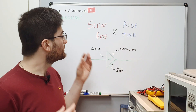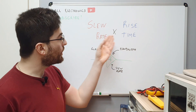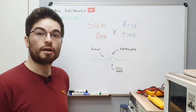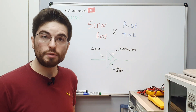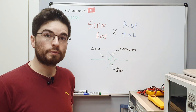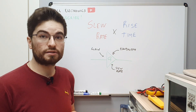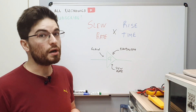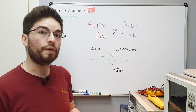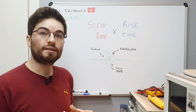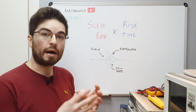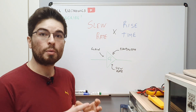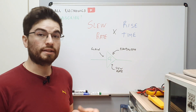Slew rate and rise time are two different parameters of analog circuits, and they appear when we are working with circuits that have small signal and large signal performance.